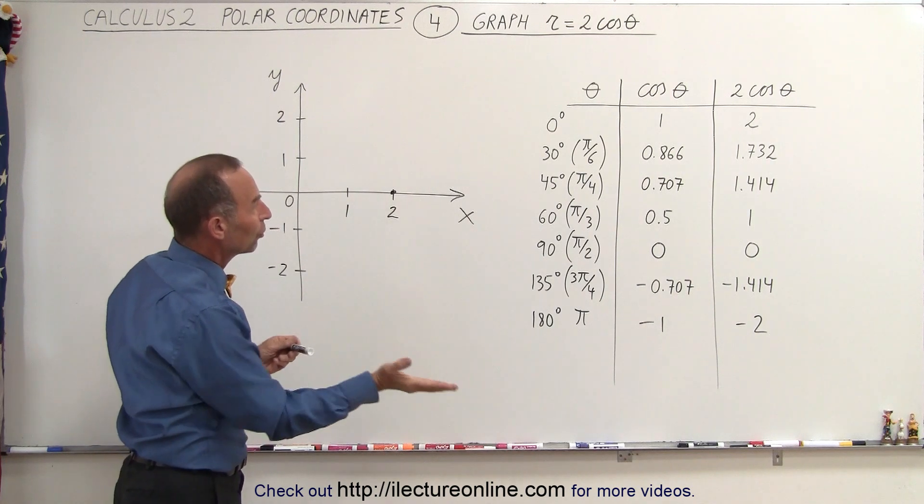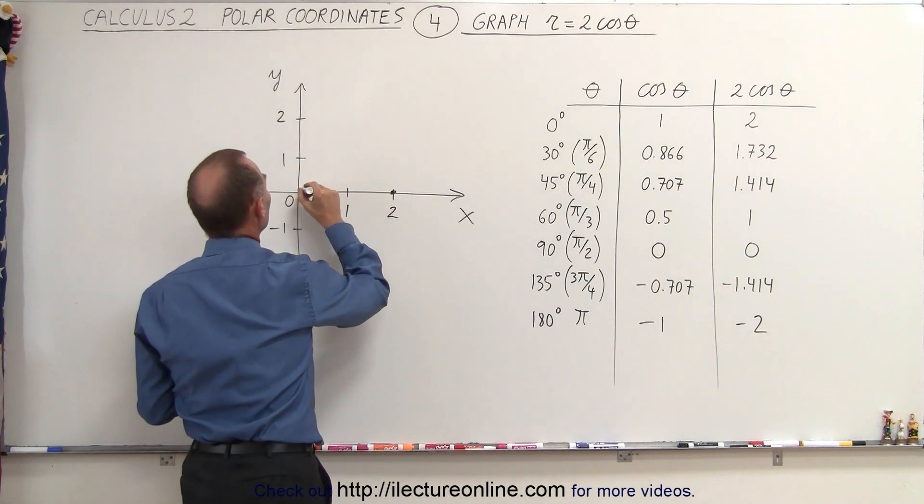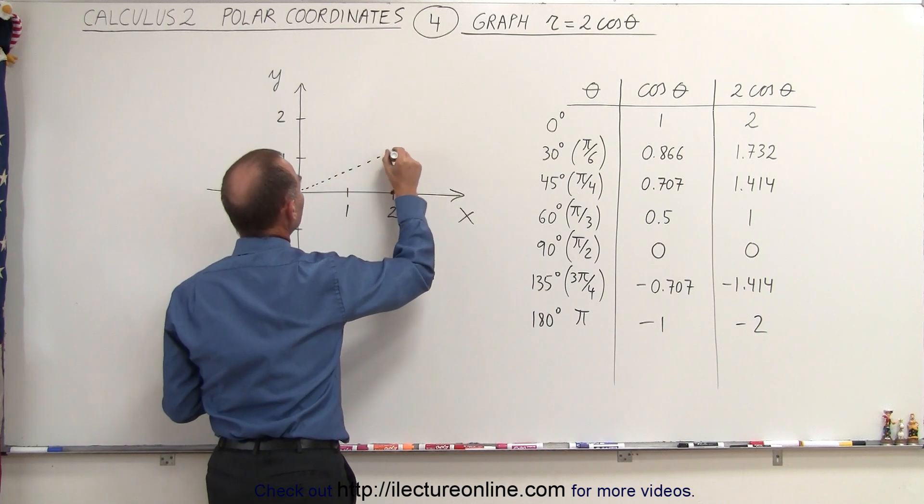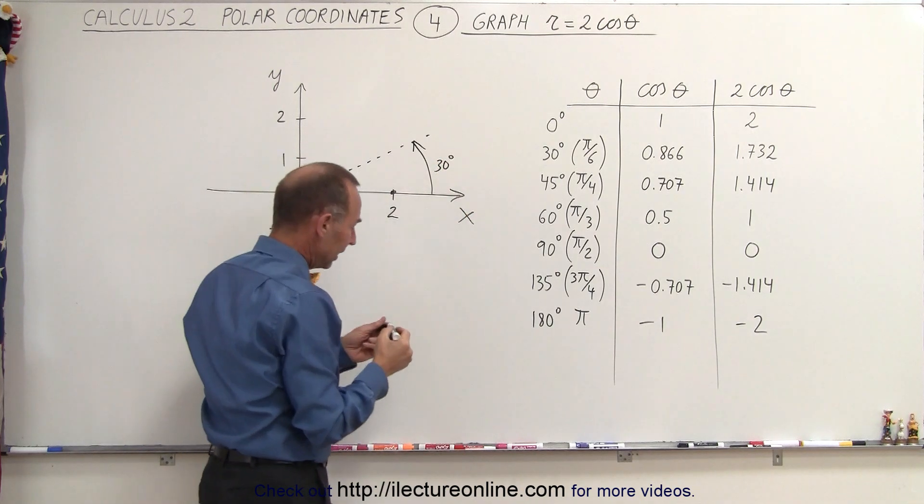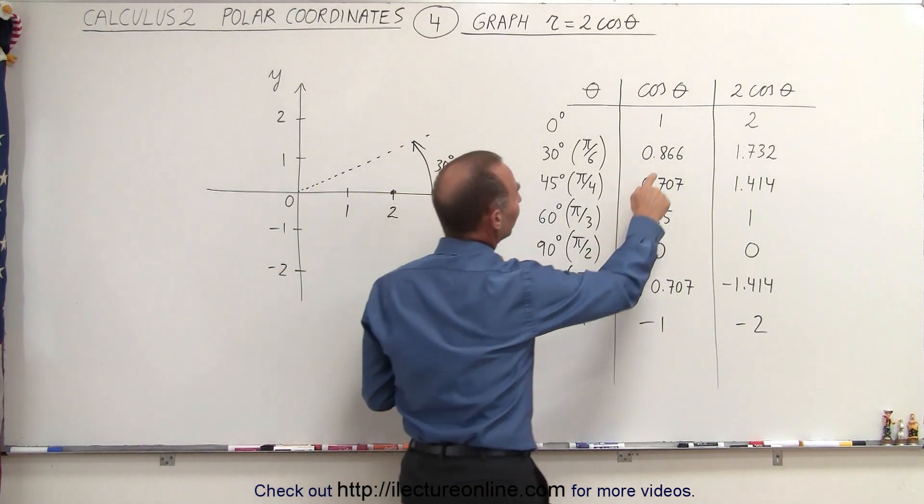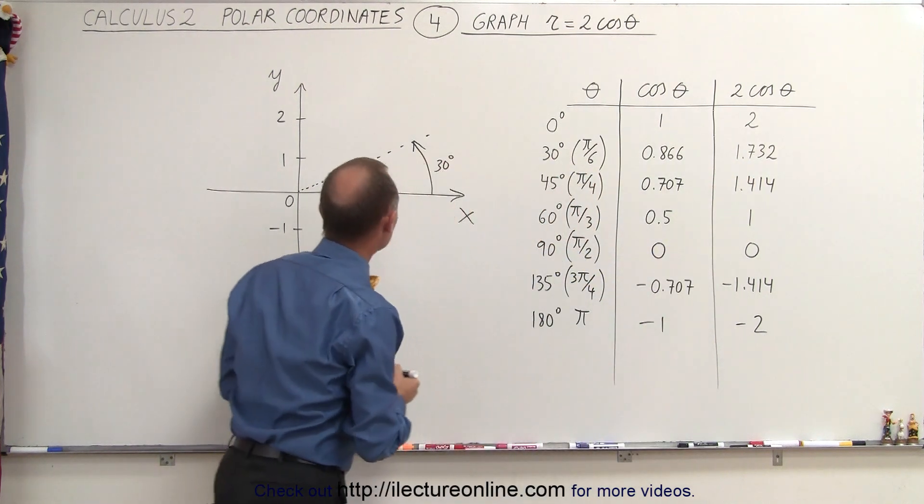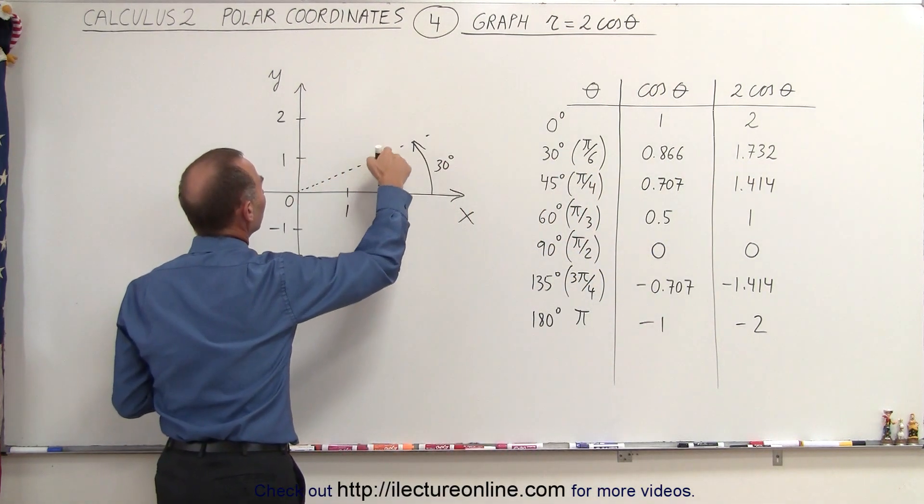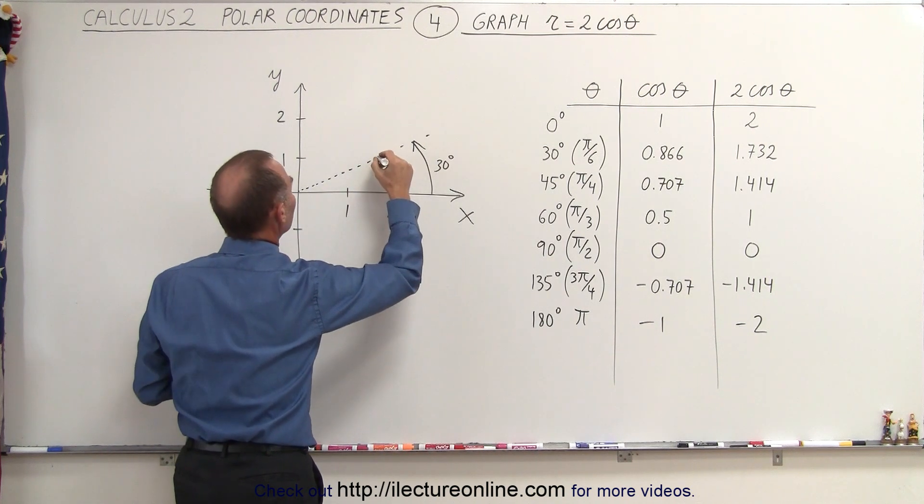Then we move to an angle of 30 degrees, pi over 6, which is roughly in this direction. So this is roughly an angle of 30 degrees. And then we find that the cosine of that is 0.866, or twice that, 1.732. So along this line right here, we find a distance of about 1.732, which is roughly about there.